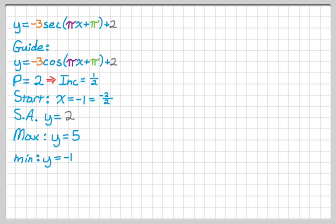Sinusoidal axis is 2. The amplitude is 3, so I add 3 and I subtract 3 from the sinusoidal axis to get the maximum and minimum. And then A is less than 0, so the pattern for the guide function is minimum, intercept, maximum, intercept, minimum.